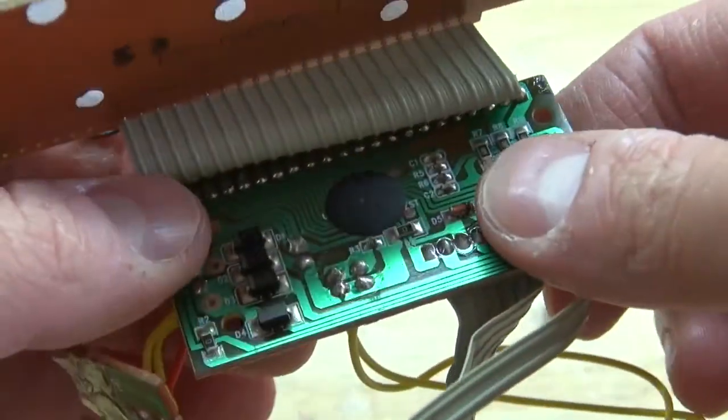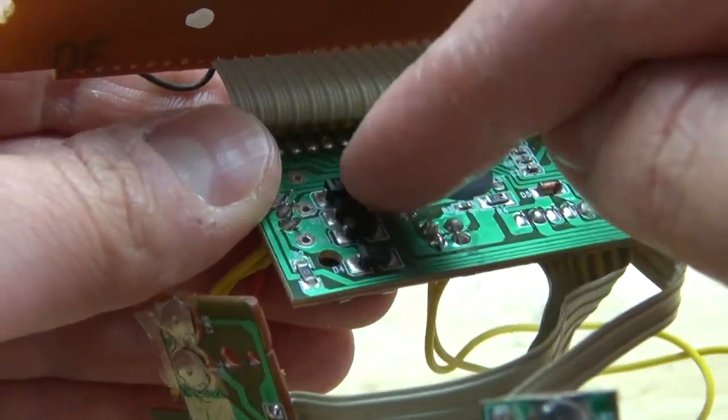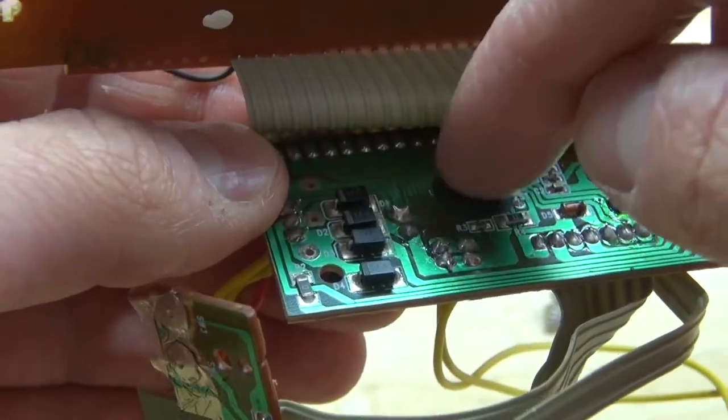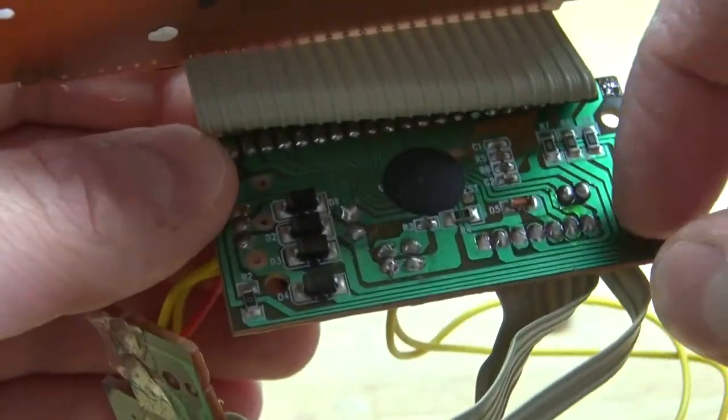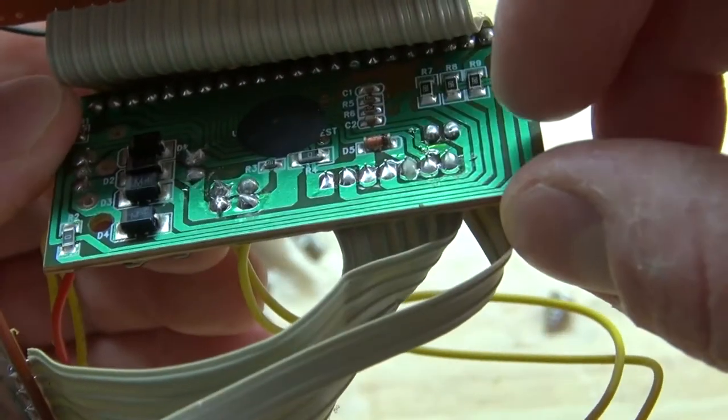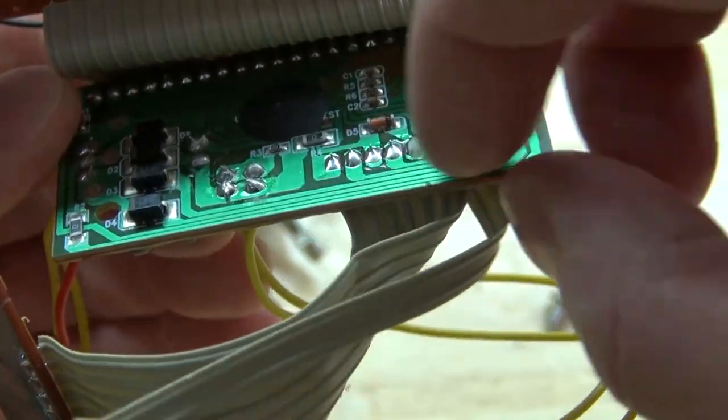Some surface mount diodes. And right here the main microcontroller that controls the entire circuit. And there are a few little components such as some resistors and some diodes.